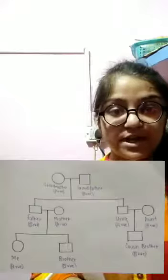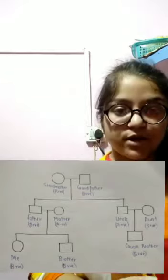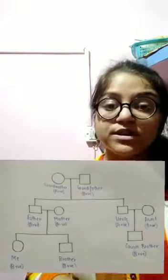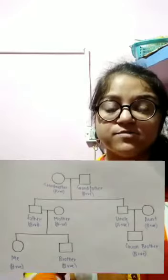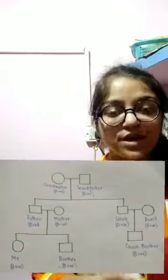My friend and I studied the pedigree charts of three families to understand blood group inheritance, and we want to share our results with you. This is the pedigree chart of my family. We can see that my grandfather has A positive blood group and my grandmother has B positive blood group. They have two children — my father and my uncle — who have A positive and B positive blood groups respectively. It is clear from this chart that blood group is inherited from the parents.